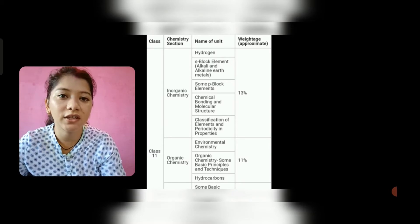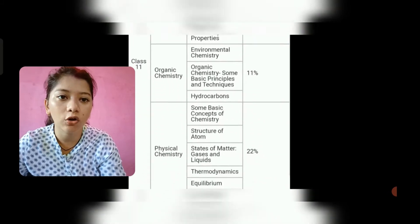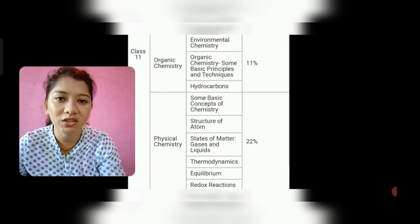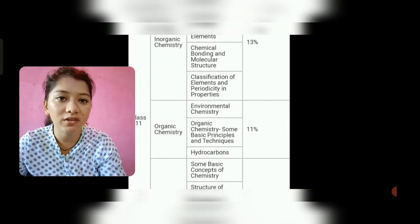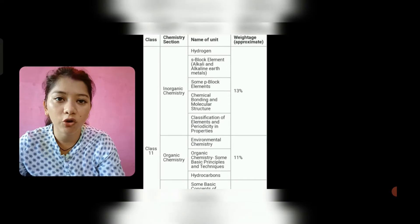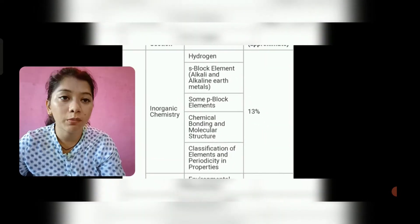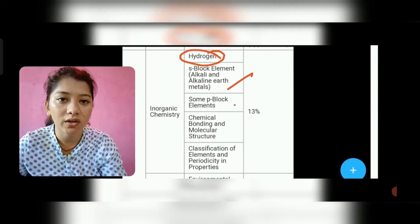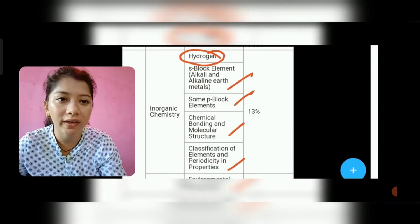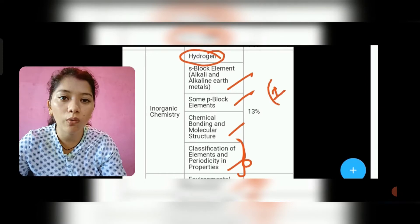So this is the 11th syllabus. We have three parts: inorganic, organic, and physical chemistry. This is the percentage that you are seeing this time. First we start from inorganic. If you are watching, the first is hydrogen chapter which is important, S block, P block, chemical bonding, classification. The entire chapter is very important. This time there was 13% overall chemistry.